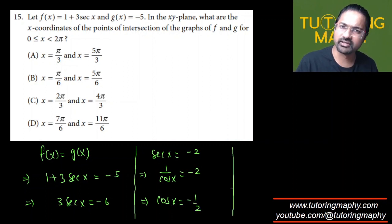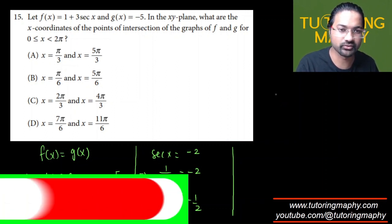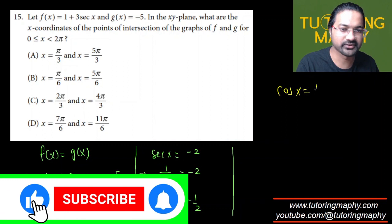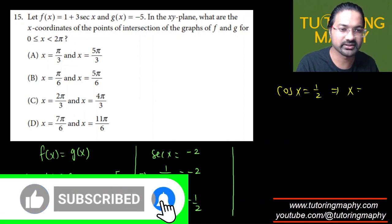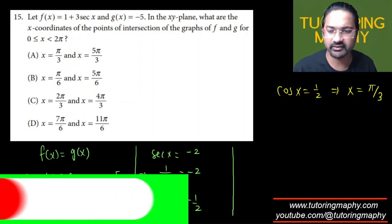And when is cos negative 1 over 2? In quadrant 2 as well as 3 because in 1 and 4, cos is positive. And what is the reference angle? The reference angle we can just find by dropping the negative sign. So the reference angle is going to look like cos of x is equal to 1 over 2, which means that x is 60 degrees. Right? Pi over 3. That's the reference angle.